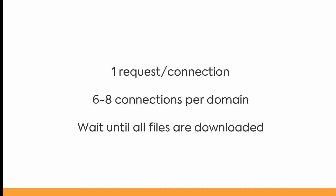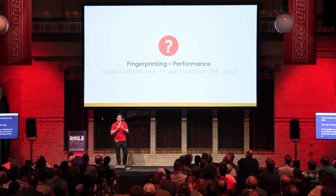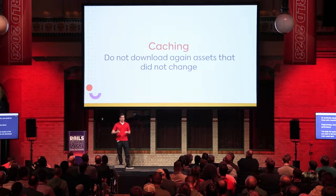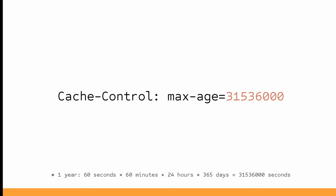Fingerprinting, however, is only about performance. The basic rule about assets is that you want to tell the browser not to download every asset each time you change pages — if you have already downloaded this asset, do not download it again. And we do that with the cache control header, which we set to one year.